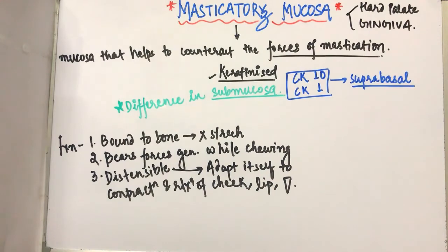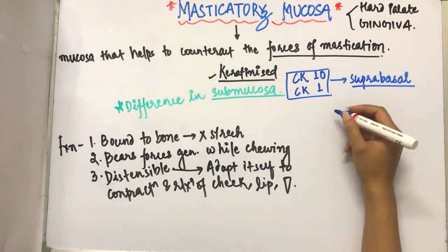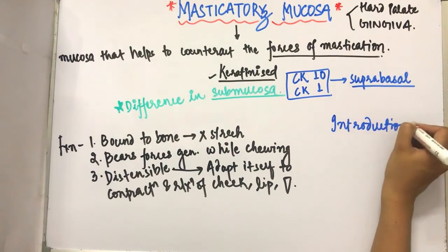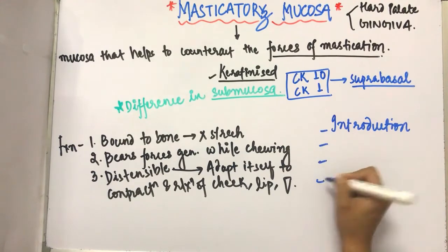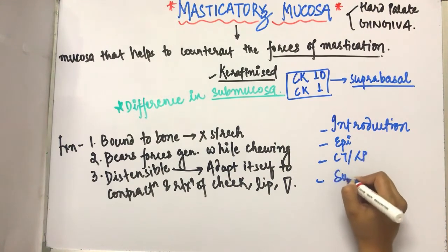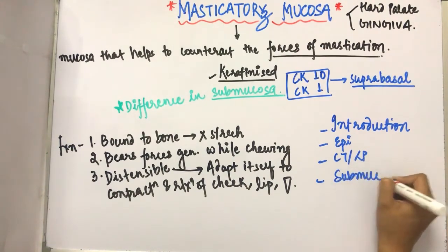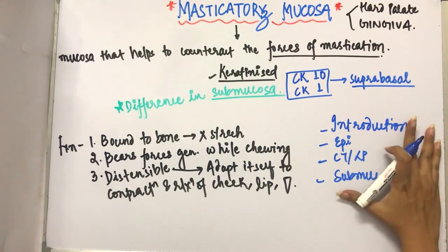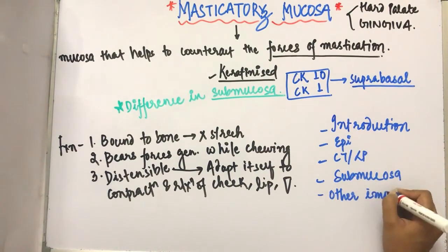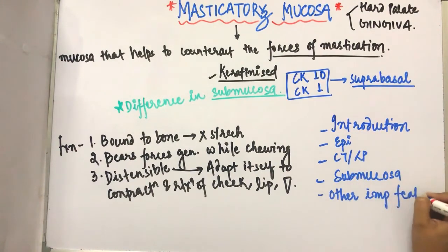Masticatory mucosa has two parts: the hard palate and the gingiva. These form very important exam questions. When answering, you need to write an introduction, then mention the epithelium, connective tissue or lamina propria, followed by the submucosa, and then the other important features.